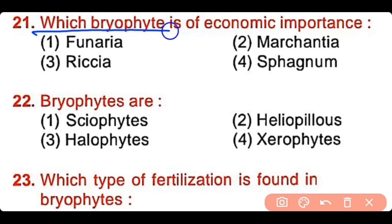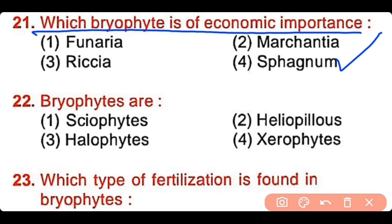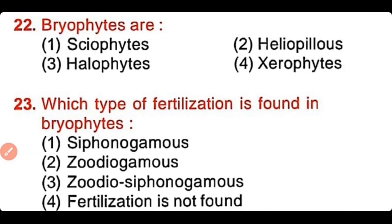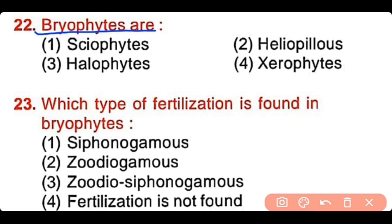Question number 21: Which bryophyte is of great economic importance? Funeria, Marchantia, Retia, or Sphagnum. The correct answer is option 4. Sphagnum moss is very economically important because it is used to produce peat. Question number 22: Bryophytes are sciophytes, heliophilous, halophytes, or xerophytes. The correct answer is option 1. Bryophytes are sciophytes, meaning they grow in moist and shady places.